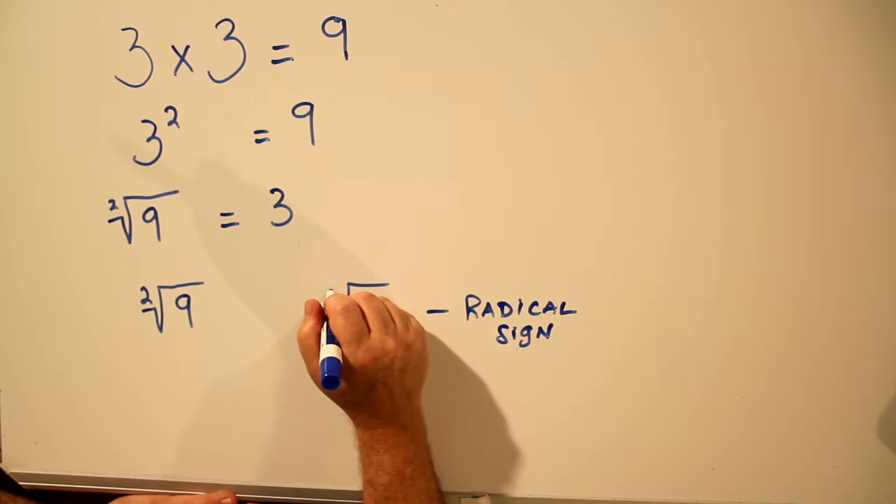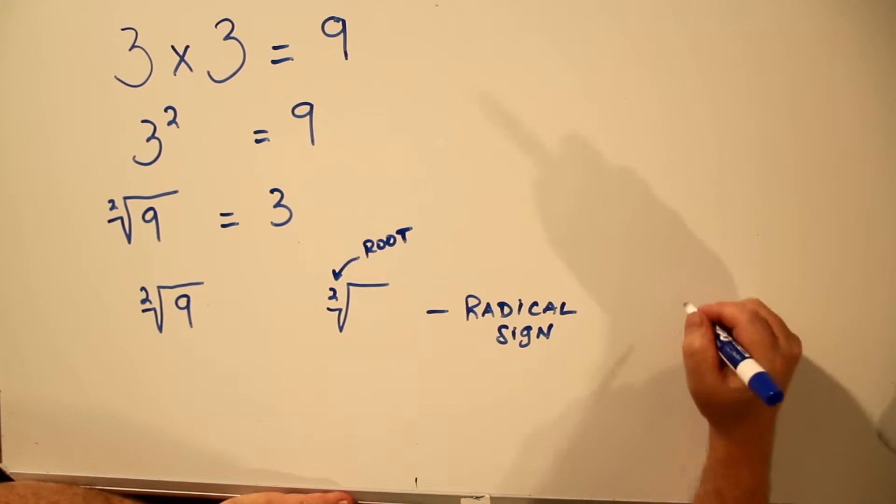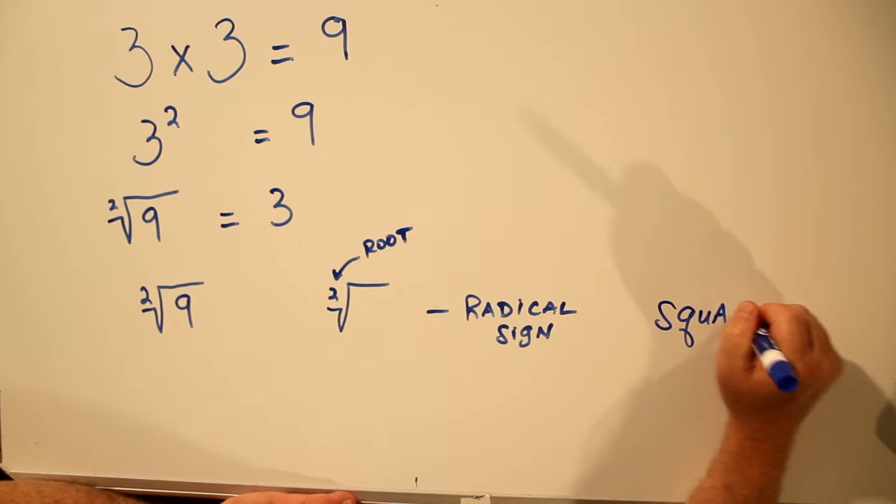The number inside is called the root. In this case, we have the second root. The second root is also called the square root.